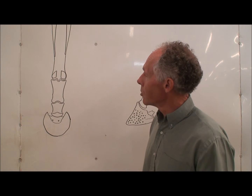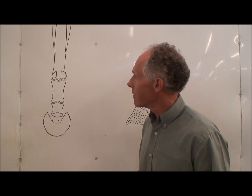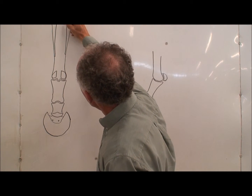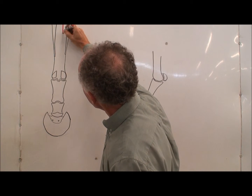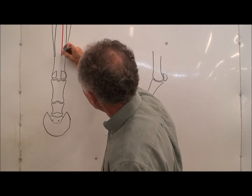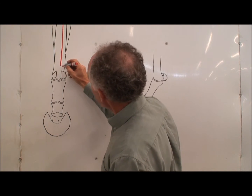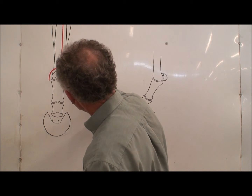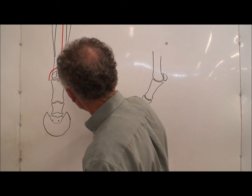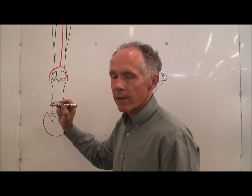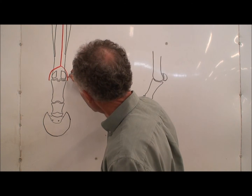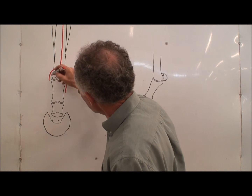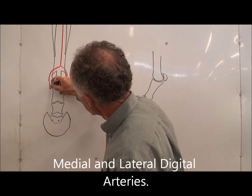Now we'll look at the individual arteries of the horse's leg. We start out with a single artery which runs down the palmar face of the leg — the main palmar artery. It branches proximal to the proximal sesamoids and becomes a medial and lateral branch, and it's here that you feel the pulse in a horse's leg. From here down they are called the digital arteries — medial and lateral — and they pass down the leg.